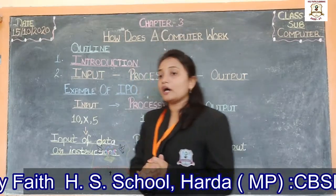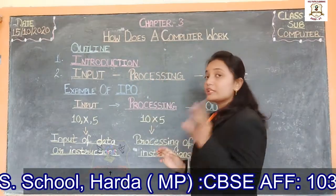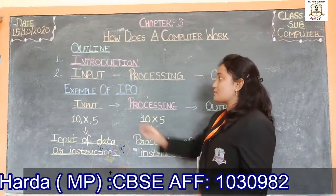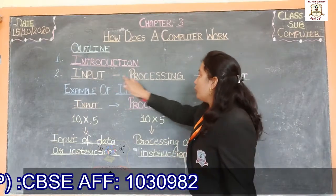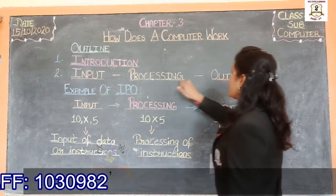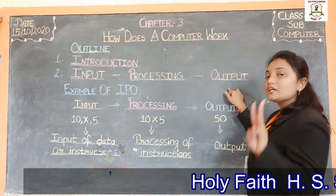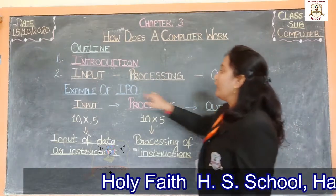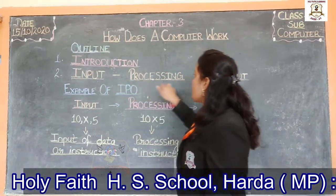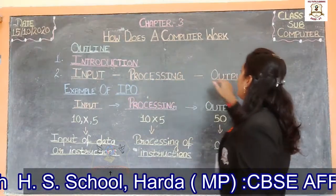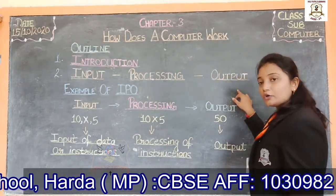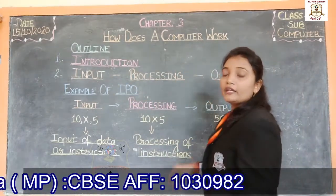Now a computer works in three basic steps: input, processing, and output. How many basic steps? Three — input, processing, and output.